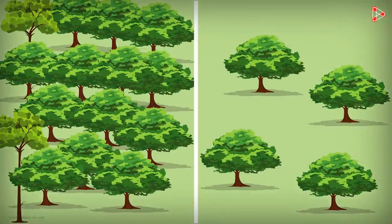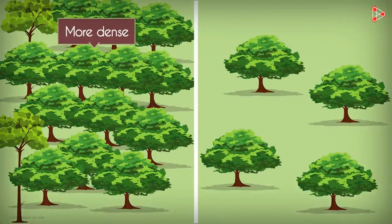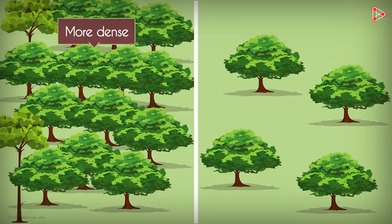Now look at these two forests. Which one is more dense with trees? Clearly it's this one. So in the same given amount of space, if there are more things, we say that it's denser.